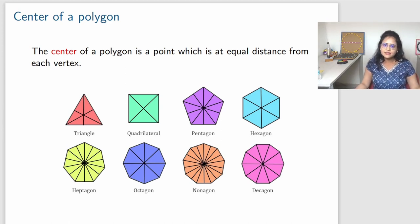Now, the next concept is the center of a polygon which is very easy to construct. The center of a polygon is a point which is at equal distance from each vertex. We see here the centers of triangle, quadrilateral, all centers, how to construct, it's very easy.